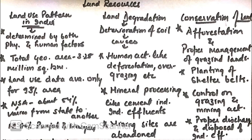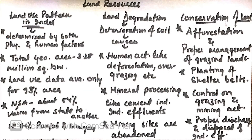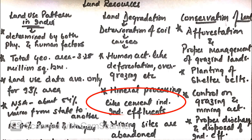According to this policy, 33% area should come under forest to maintain ecological balance in the environment. Next is land degradation, meaning deterioration of soil. Causes responsible for land degradation include human activities like deforestation, overgrazing, mineral processing like the cement industry, and industrial effluents. Mining sites are also abandoned.